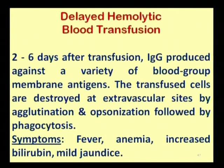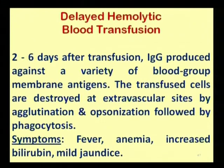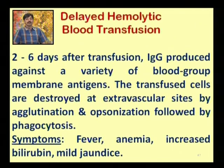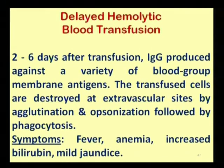The antigen-antibody reaction leads to a hemolytic reaction, causing RBCs to be lysed. Immediate treatment involves stopping the blood transfusion. After two to six days, IgG antibodies are also produced and destroy cells at extravascular sites via opsonization and phagocytosis. In this condition, fever, anemia, increased bilirubin, and mild jaundice are generated.